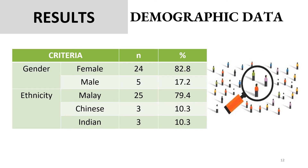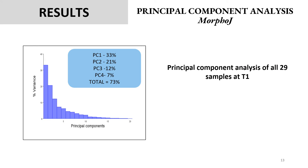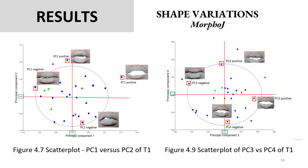From the demographic data, it is apparent that there were more female subjects of Malay ethnicity. Principal component analysis was used to reduce the dimensionality of the data — in simple terms, to simplify the data and categorize the different shapes according to their most distinct features. The first four principal components accounted for 73% of the shape variation in all subjects, meaning the first four shapes identified accounted for 73% of the 29 samples. Shape variations were identified using the MorphoJ software, showing a wide variation of lip shape amongst these 29 subjects, with no single distinct pattern.